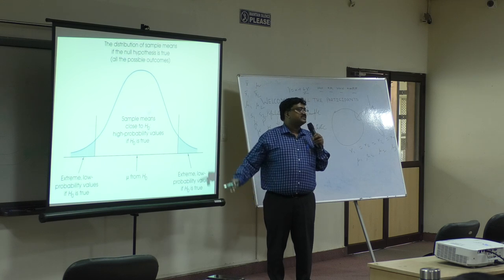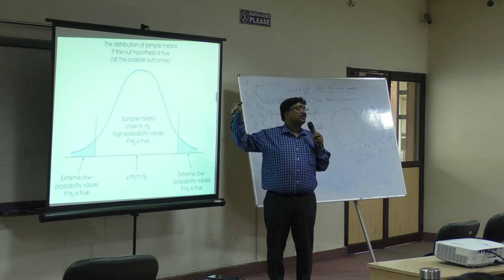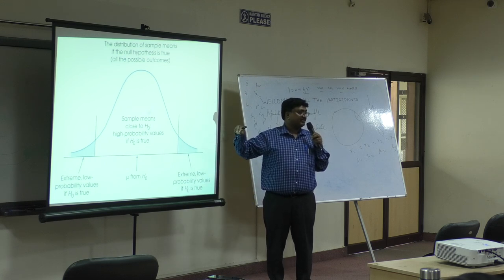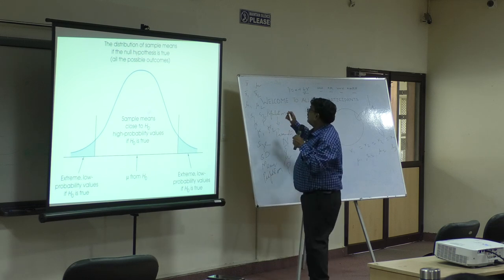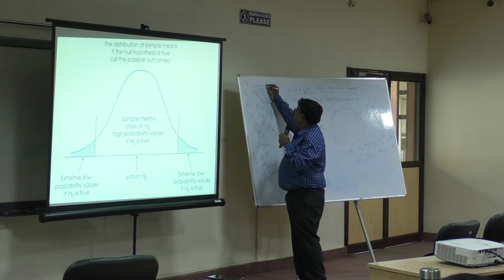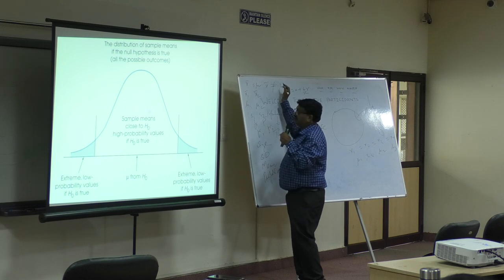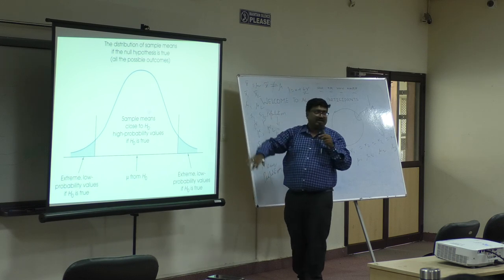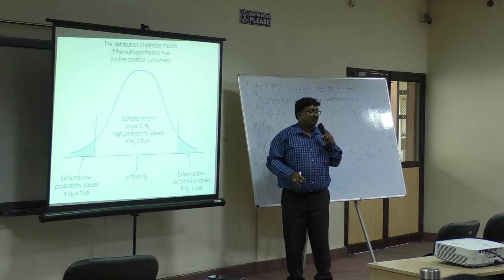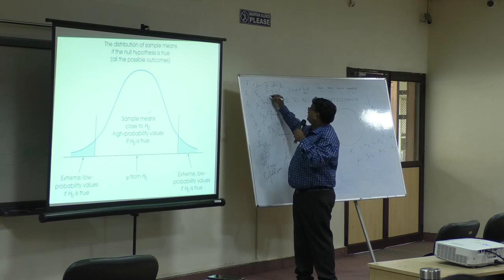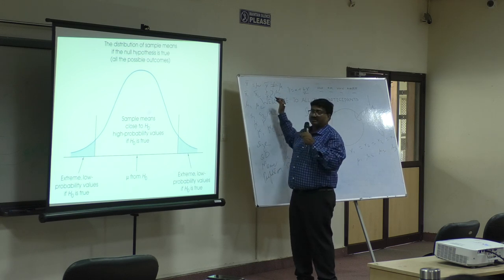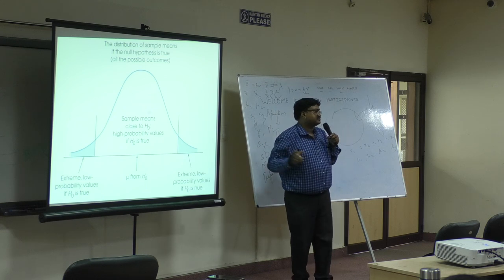This is a two-tailed test, which is without direction. So in the null hypothesis, if you have an equal-to symbol and in the alternate hypothesis you have a not-equal-to symbol, then it is a two-tailed test. But if you have a symbol to do with greater than or less than, then it is a one-tailed test.